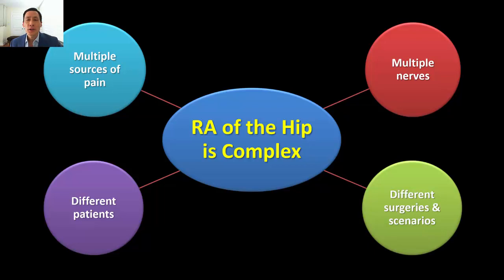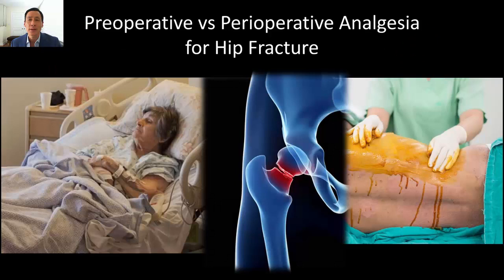Different surgeries and scenarios also call for different blocks. As a good example, the choice of block in the hip fracture patient is influenced by whether we are doing this to provide preoperative analgesia and opioid sparing while awaiting surgery, or whether we're doing this in the operating room, perhaps to provide analgesia for positioning for our spinal, or more importantly, for postoperative analgesia. The considerations are quite different.